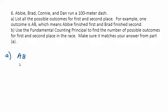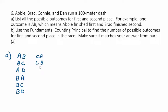If Abby finishes first, then Brad could be second, Connie could be second, or Dan could be second. That's it for Abby finishing first. Now Brad finishing first: it could be Brad then Abby, Brad then Connie — notice I skipped Brad and Brad, because that's not a possibility — or Brad then Dan. For Connie: Connie-Abby, Connie-Brad, Connie-Dan. And then Dan: Dan-Abby, Dan-Brad, Dan-Connie. That looks like 12 — there are 12 possibilities for first and second.